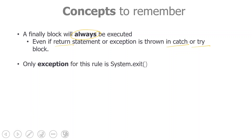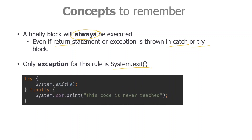We need to remember a few concepts here. One concept is that the finally block will always be executed — no matter what. Even if there is a return statement, or even if there is an exception thrown in the catch or try block, the finally block will always be executed. There is only one exception to this rule: if there is a System.exit statement inside a try or catch block. Because System.exit will completely terminate the code, and in that case the finally block will not be executed.